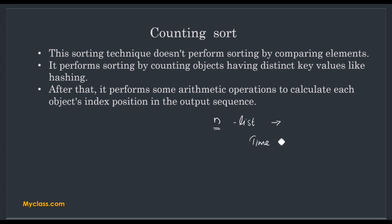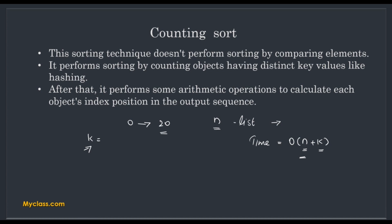The time complexity of counting sort is O(n) or we can also say O(n + k). In best case, worst case, and average case, the complexity is O(n + k). Here, n is the number of elements and k is the range of the elements in that list. The range means the maximum value among all elements — for example, if the biggest value is 20, then k equals 20. We are creating an array with k elements and doing operations on it, which is why the time complexity is O(n + k).